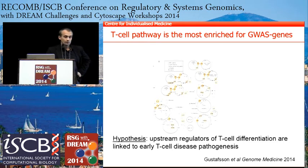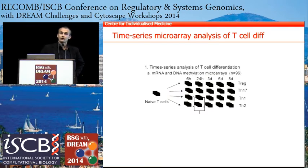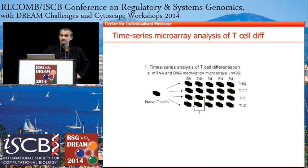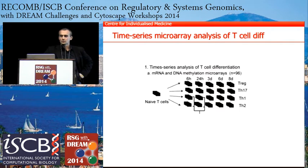The T-cell pathway is quite well known, but we take a data-driven view and generate our own data of this process. We take naive T cells from healthy donors and add different cytokines to drive them into different lineages: TH1, TH2, TH17, and T-regs. We take samples at different time points during the process — six hours, 24 hours, three days, six days, eight days, and so forth. From this dataset we aim to identify the upstream regulators of the process.